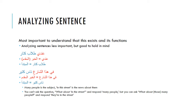Think about it this way: ناس كتير is the subject — what we're talking about is these people, and the information is the news about them. You can't really ask 'what about in the street?' as a topic — but you can ask 'what about those many people?' and answer 'they're in the street.' That's how you can tell what is the مبتدأ versus the خَبَر.